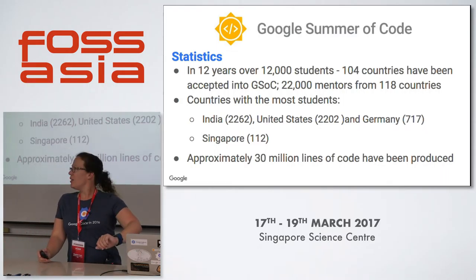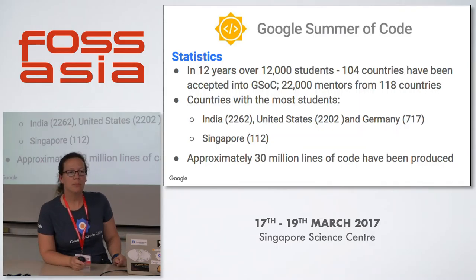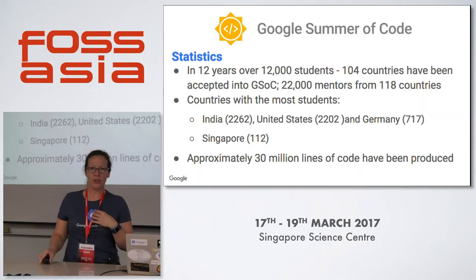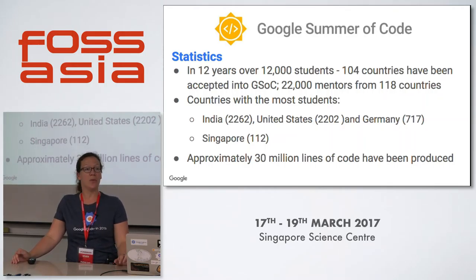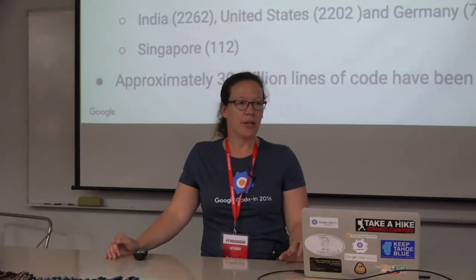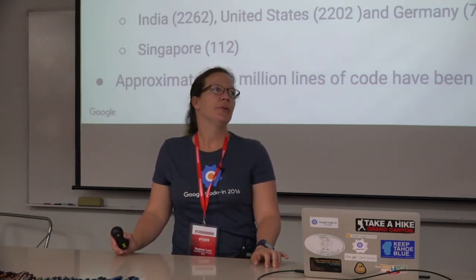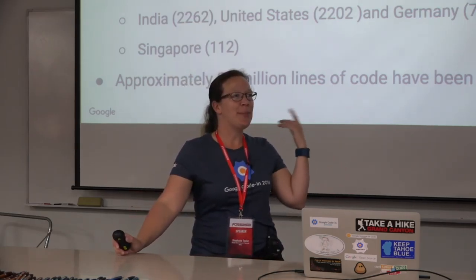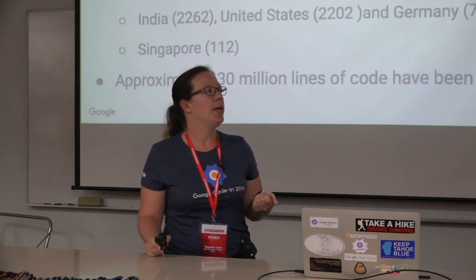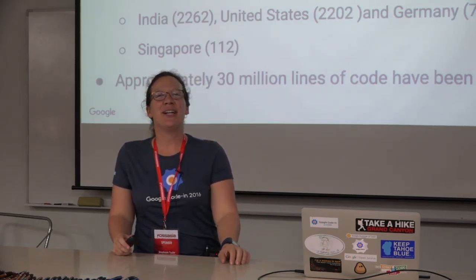I think I have time for one question. An audience member asked: do you need to be affiliated with a school or university, or can you be a homeschooler and participate? Good question — you can be a homeschooled student, yes. You just need to be between 13 and 17 years old. We actually have quite a few homeschooled students that participate. I'll be here all weekend — I'm Stephanie, and I'm happy to talk to you about Google Code In or Google Summer of Code. Feel free to come up and ask me any questions.